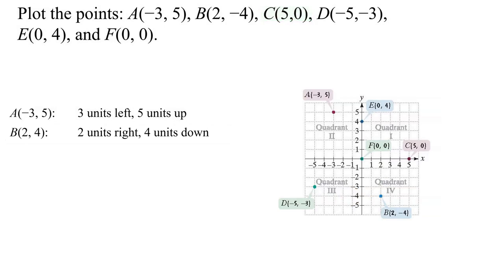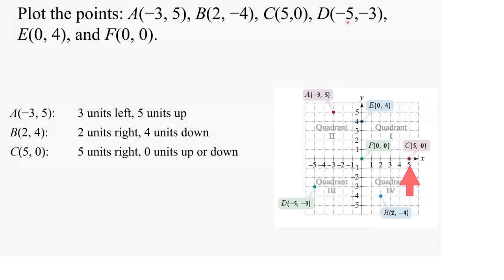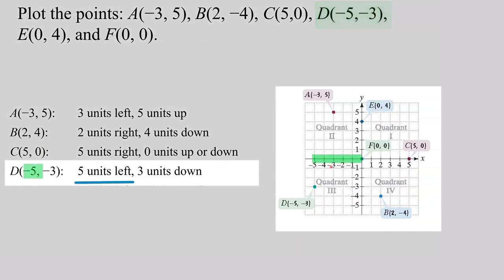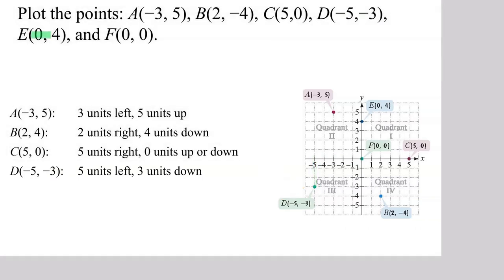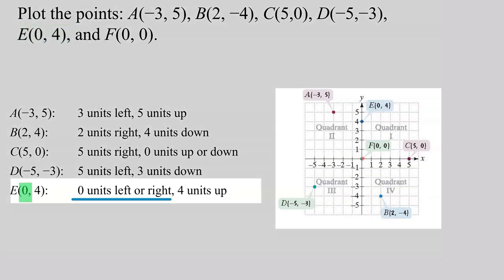To plot C, that means 5 units to the right of the origin, and then 0 units up, so it will remain on the x-axis. The point negative 5, negative 3 means 5 units to the left and then 3 units down. The point 0, 4 means 0 units on the x-axis and then 4 units up, so this is 0, 4.